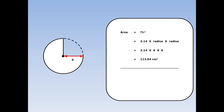Now, to work out three-quarters of a circle, I divide by 4 and then times by 3. So 113.04 divided by 4 is 28.26, and I times that by 3. My final answer is 84.78 centimetres squared.